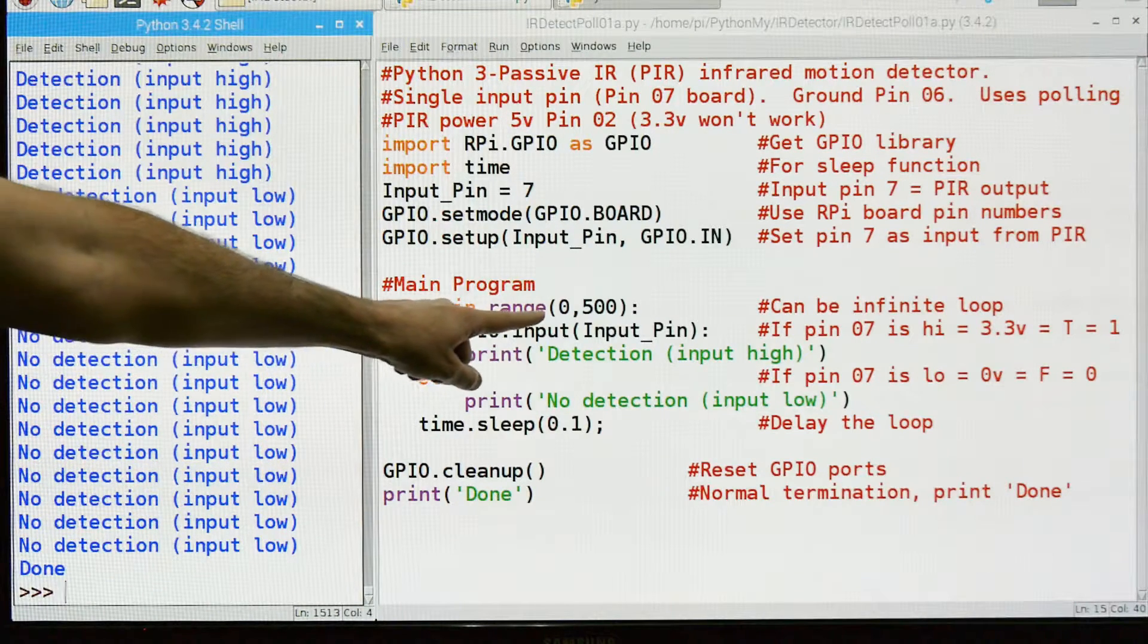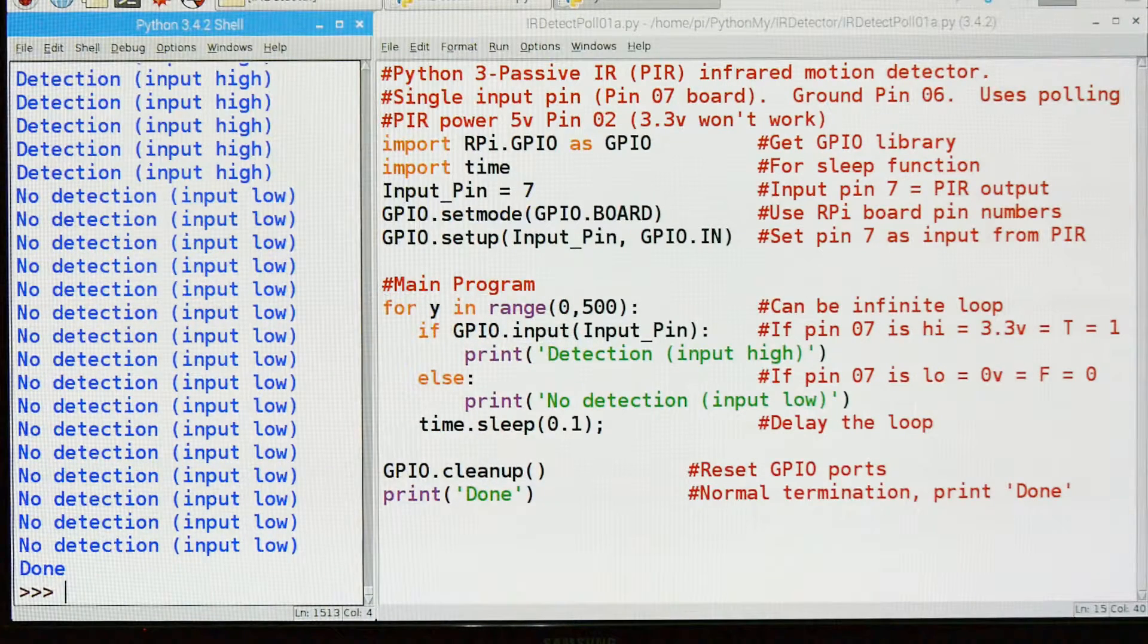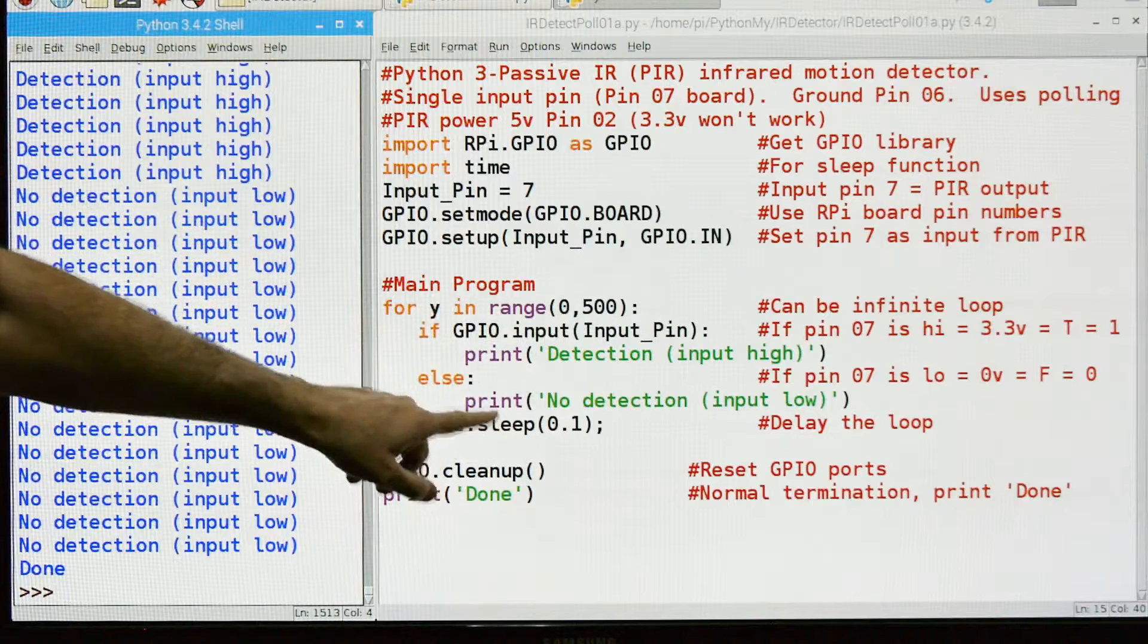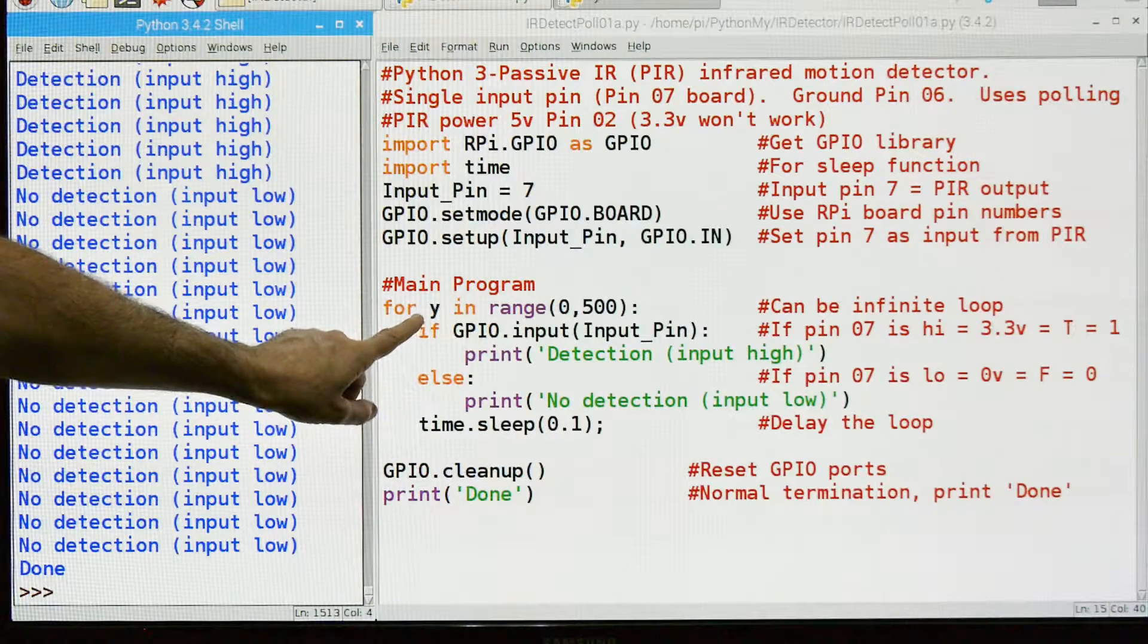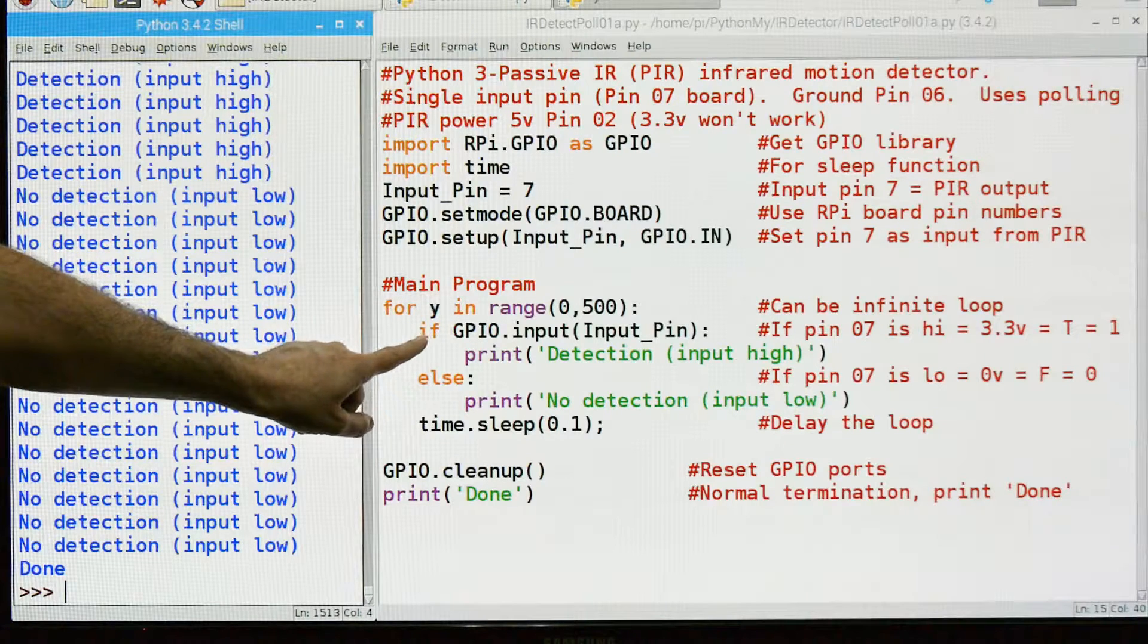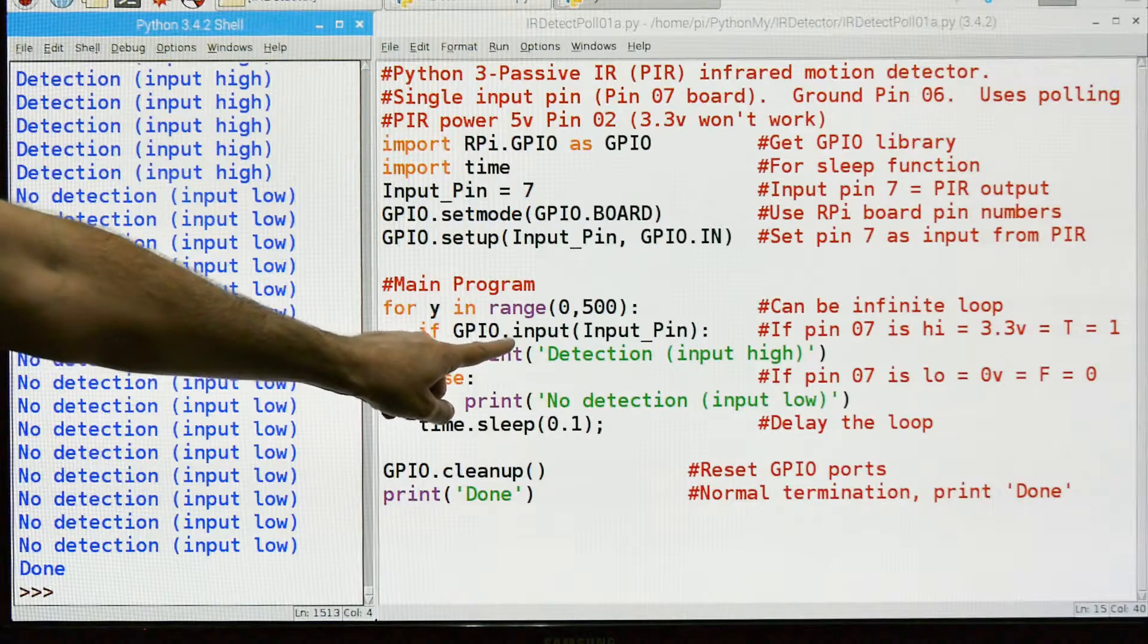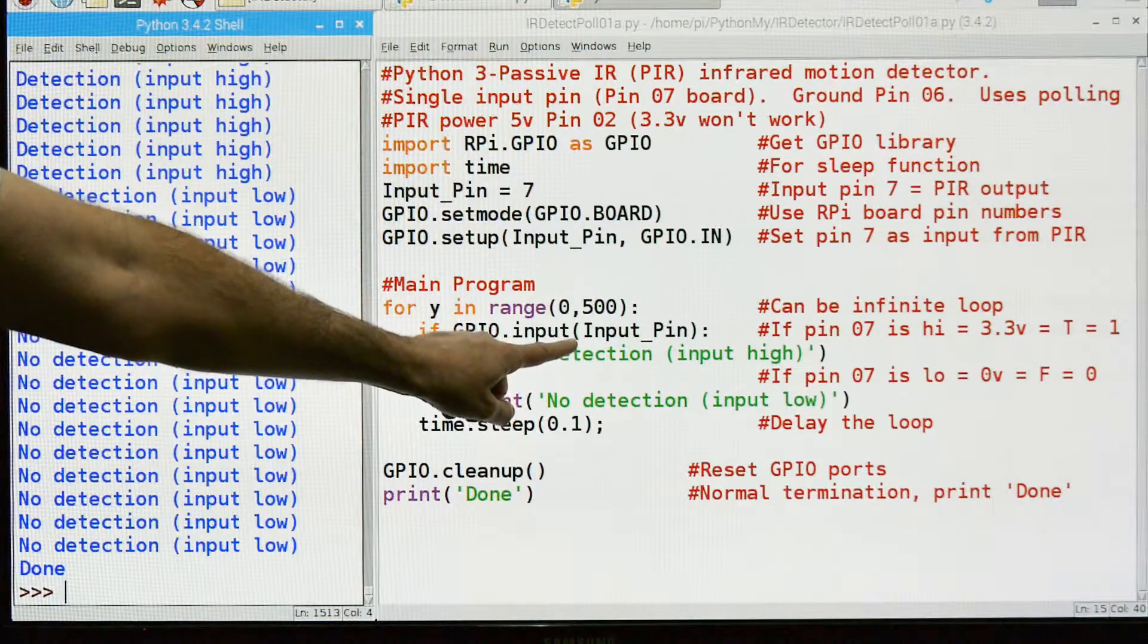So this could be an infinite loop right here. But I do it just because I don't want it to run forever. In my case, I just did from 0 to 500. But again, you could do an infinite loop. You could just say while true or something like that. Then we're going to say if GPIO input pin. And this means if it's true.